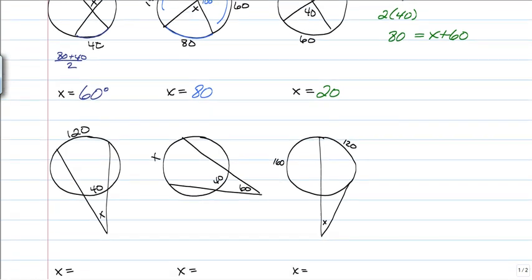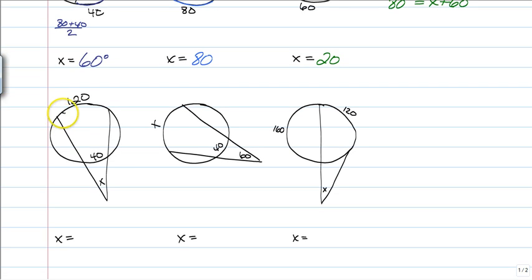So the next row is on exterior angles. The first one is as plain and simple as it can get. You subtract the two arcs, so 120 minus 40. And then you're going to divide that by 2 and that's going to give you 40 degrees.